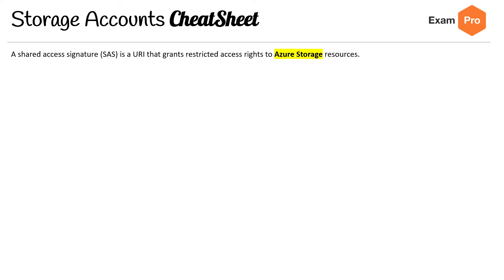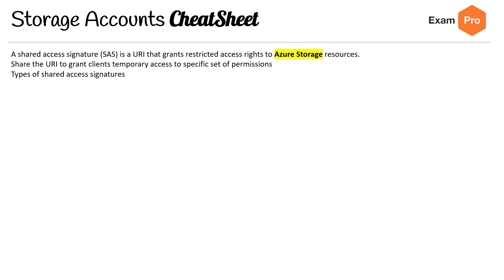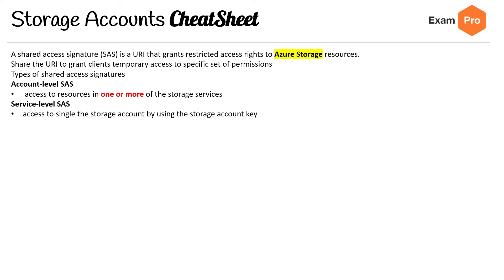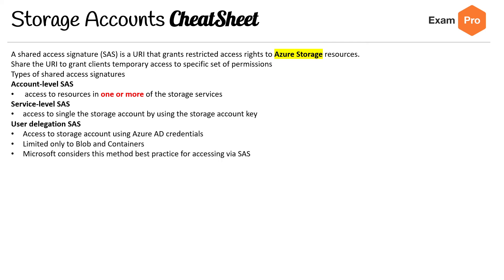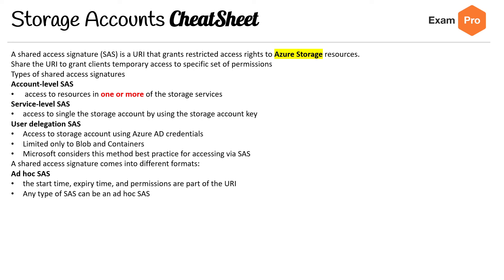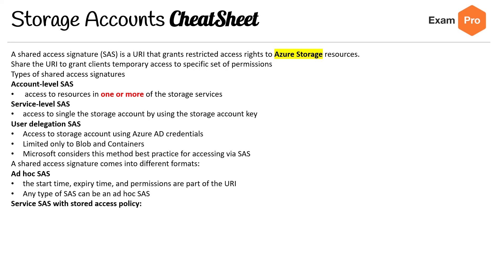Shared Access Signatures (SAS) is a URI that grants restricted access rights to Azure Storage resources. Share the URI to grant clients temporary access to a specific set of permissions. Types of shared access signatures include: Account Level SAS — access to resources in one or more storage services; Service Level SAS — access to a single storage account using the storage account key; User Delegated SAS — access to storage account using Azure AD credentials, limited only to blobs or containers, which Microsoft considers best practice for SAS access. A shared access signature also comes in different formats: ad hoc SAS and service SAS with stored access policy. And that's all the way through — hopefully you can retain all that information for the exam.